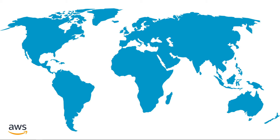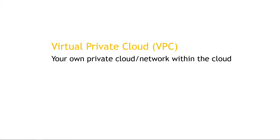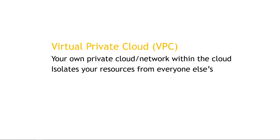You don't want to just throw your resources out there with all the other millions of resources — a soup of servers and so on. Instead, you want your own little private slice of the overall AWS pie. And that's basically what a Virtual Private Cloud, or VPC, is. It's your own private cloud or network within the cloud, within AWS, and it's how your resources are isolated from everybody else's.